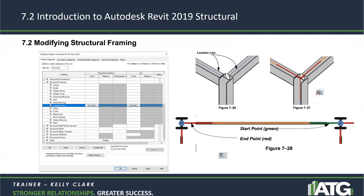When you draw framing members, the start and end orientation is based on the first and second points picked. If you draw from left to right, your start is on the left and your end is on the right. If you draw from right to left, the start is on the right and the end is on the left. You may want to switch to thin lines to make this view easier to read.